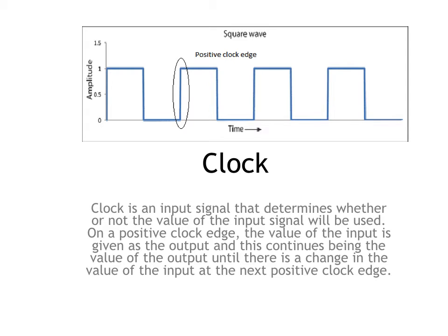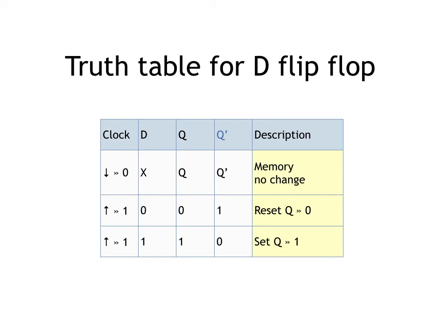On a positive clock edge, the value of the input is given as the output, and this continues being the value of the output until there is a change in the value of the input at the next positive clock edge. As you can see from the truth table, when the clock is at a negative edge, irrespective of whatever input is given, the output stays the same. However, when there is a positive clock edge, the output follows the value of the input.